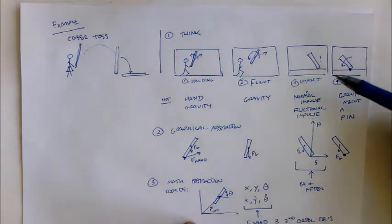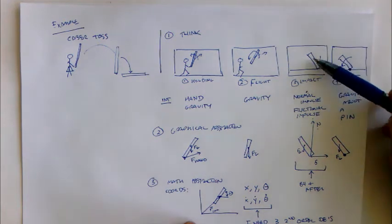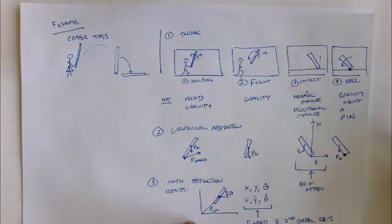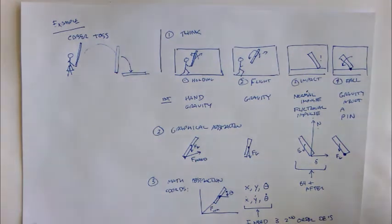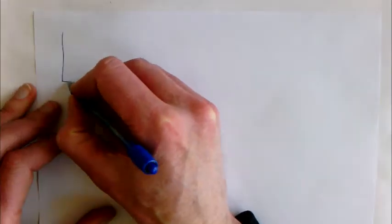The question we're going to ask here is: given some state before the caber hits the ground, what is the state after the caber hits the ground? In order to do that, the first thing worth doing is to spend a little bit of time thinking about the picture of things a little more explicitly.